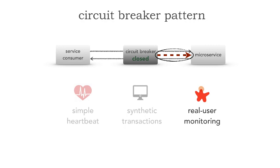Now we have a problem: if that breaker opens, it's not allowing any requests to that microservice. So how do I determine whether it has become healthy again? That's what's called a half-open state. A half-open state means I'm not going to allow any transactions through except a couple — maybe one out of every 10 transactions, I'll allow through, and start to measure responsiveness. What was that one? 6.9. Nope, it's still bad. Let nine fail, let one through — and now it's 1.7. We're back to normal and the breaker can close. That's exactly how circuit breakers work.